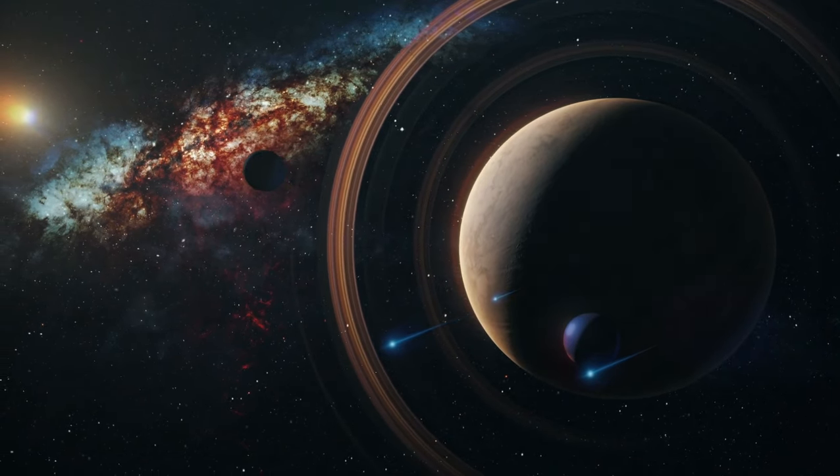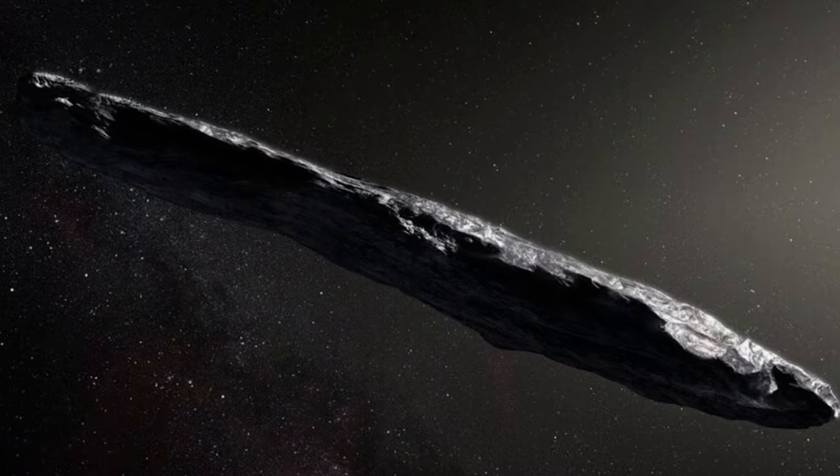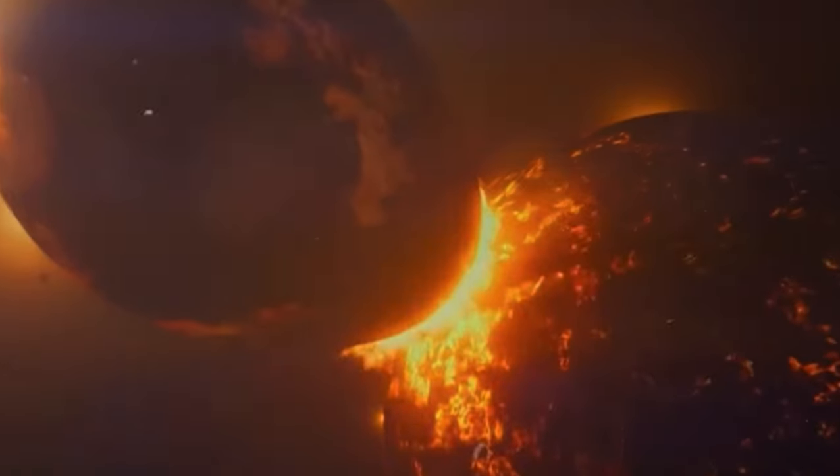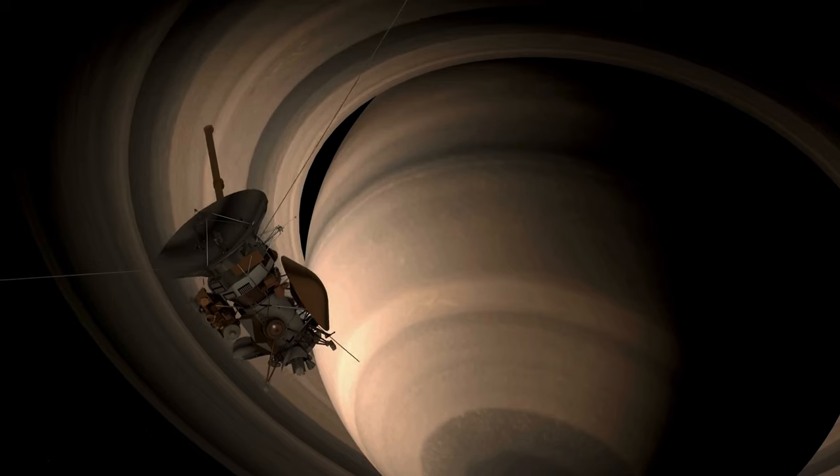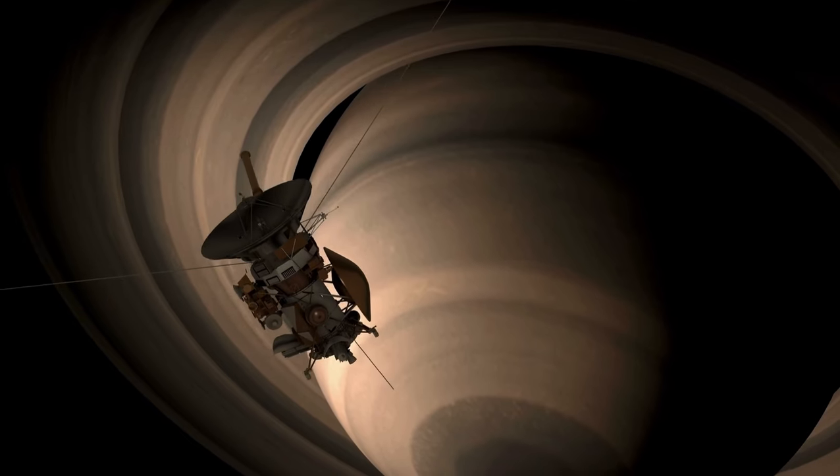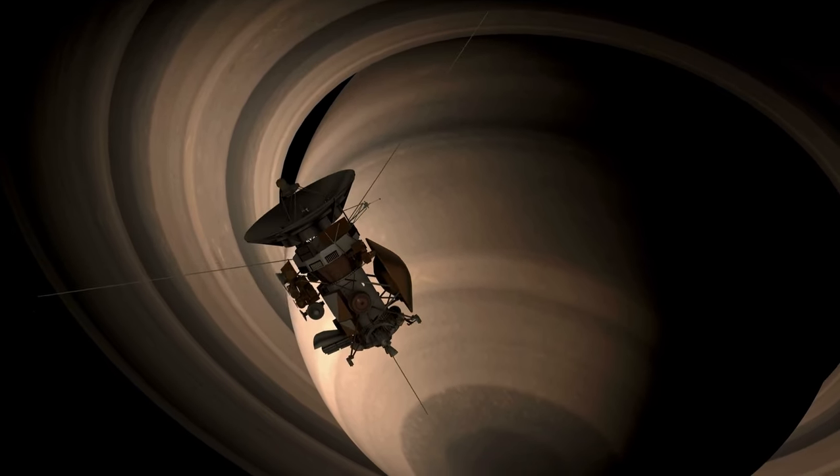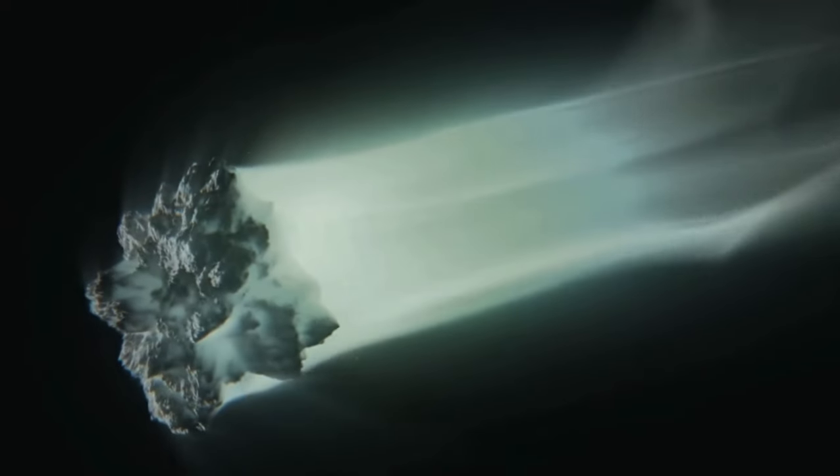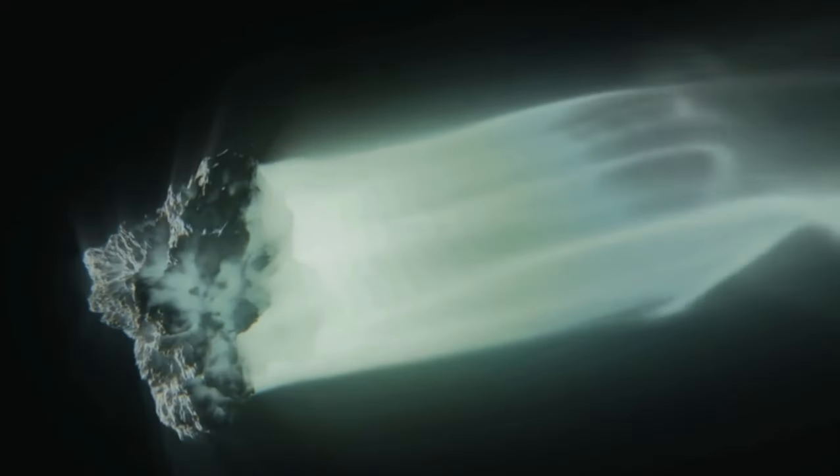Adding to the mystery is Oumuamua's remarkable acceleration, akin to a bicycle suddenly speeding up without pedaling. Entering our solar system from above, it came remarkably close to the sun before continuing below the planetary plane, maintaining an extraordinary speed of about 196,000 miles per hour, indicative of significant kinetic energy. This speed is unparalleled by any human-made object.